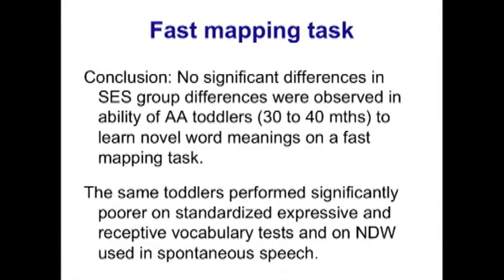What they found was there were no significant differences based on socioeconomic status in the ability of African American toddlers — 30 to 40 months — to learn novel word meanings on a fast mapping task. The children from the lower socioeconomic background who were typically developing performed at the same level as the kids from a higher socioeconomic background. So you took out the socioeconomic bias that you have in standardized vocabulary tests and in type-token ratio and number of different words.